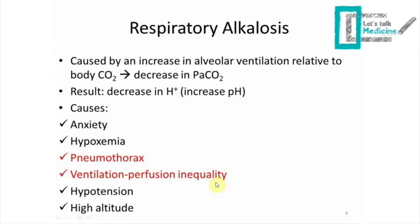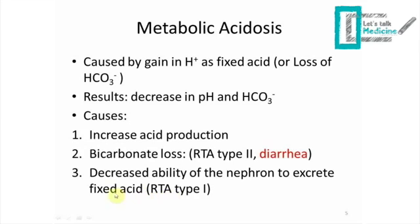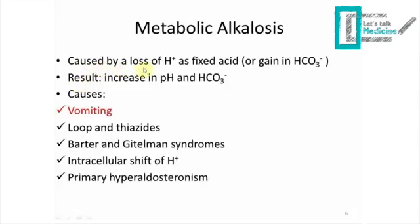Metabolic acidosis is caused by a gain in hydrogen ions as fixed acid or loss of bicarbonate. A western or high-protein diet can increase fixed acid. The result is a decrease in pH and bicarbonate. Causes include increased acid production, bicarbonate loss such as in renal tubular acidosis type 2, diarrhea, and decreased ability of the nephron to excrete fixed acid, as seen in renal tubular acidosis type 1.